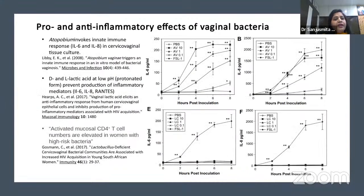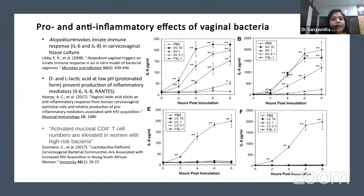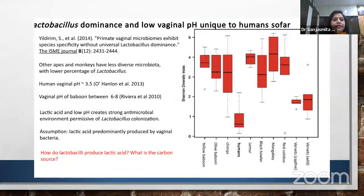Regarding pro- and anti-inflammatory effects: Atopobium invokes innate immune response in cervicovaginal tissue cultures. Lactic acid (D and L forms) production lowers vaginal pH and prevents production of inflammatory mediators like interleukin-6, IL-8, and others. Activated mucosal CD4 T cell numbers are elevated in women with high-risk bacteria. Lactobacillus dominance and low vaginal pH is unique to humans. This lactic acid and low pH creates a strong antimicrobial environment permissive only of lactobacillus colonization.